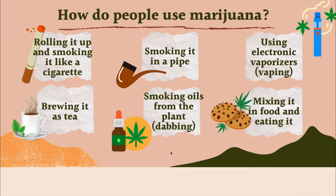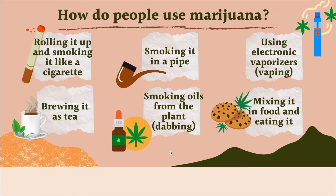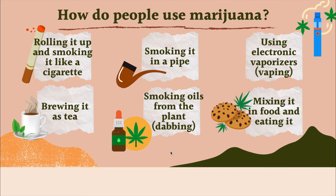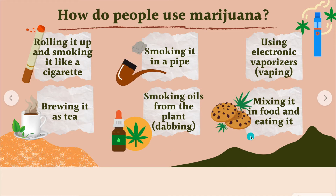A lot of companies and people will collect the oil from marijuana by cooking it and getting it very hot to collect a highly concentrated oil. This is called dabbing. People smoke this concentrated oil, and this can be really dangerous because it's a very high concentration of marijuana.